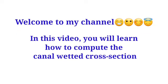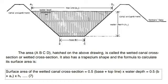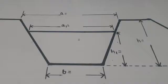Welcome to my channel. In this video you will learn how to compute the canal wetted cross-section. The area ABCD hatched in the above drawing is called the wetted canal cross-section or wetted cross-section. It also has a trapezoid shape, and the formula to calculate its surface area is 0.5 times base plus top line times the water depth.